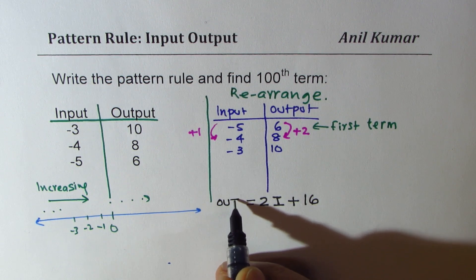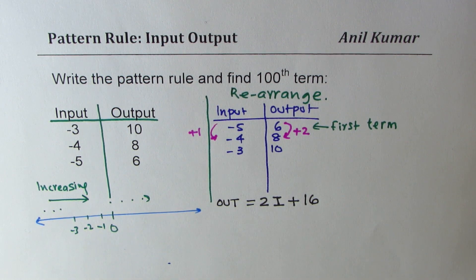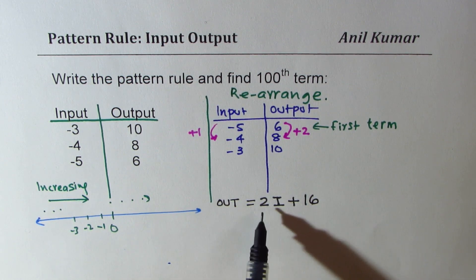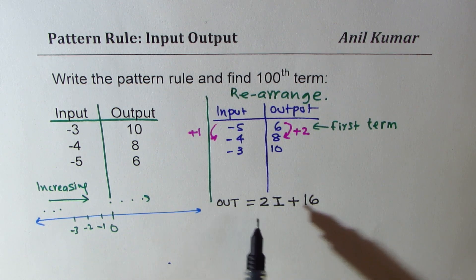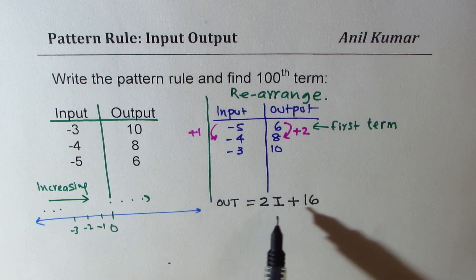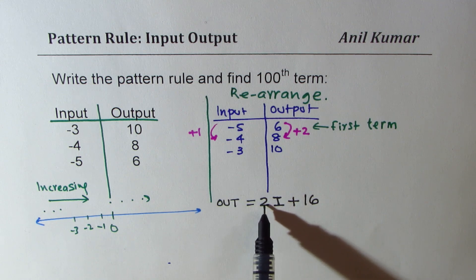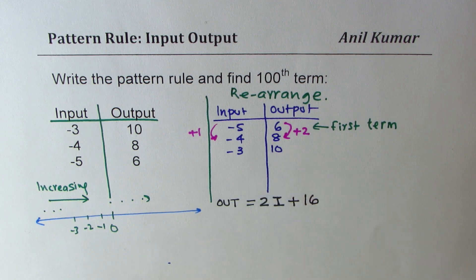So for every input that is how my output is related. So if my input is minus three, then this is minus three times two which is minus six, output is ten. So that becomes a relation which relates all this.